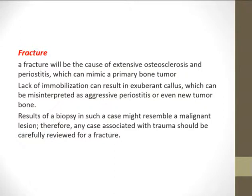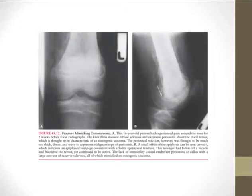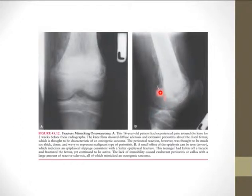Regarding fractures, they will cause extensive osteosclerosis and periostitis that can mimic a primary bone tumor. Lack of immobilization results in exuberant callus, which can be misinterpreted as aggressive periostitis. Biopsy in such cases might resemble a malignant lesion, so you should not perform a biopsy in cases of fracture. For example, there is exuberant periosteal reaction suspicious for osteosarcoma, but careful examination reveals a slipped femoral epiphysis — a Salter-Harris fracture — so no biopsy is needed.